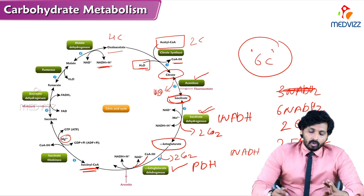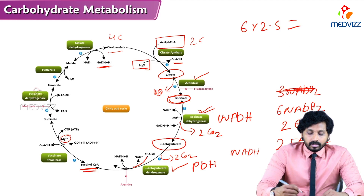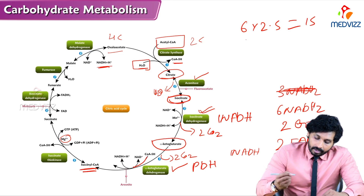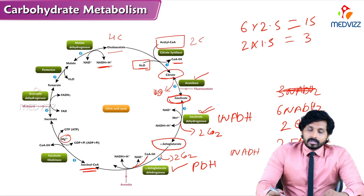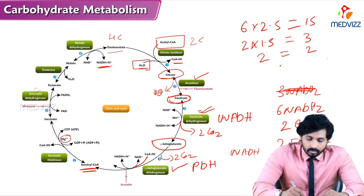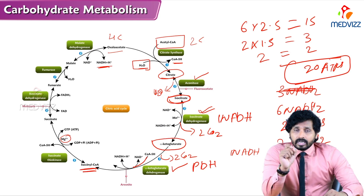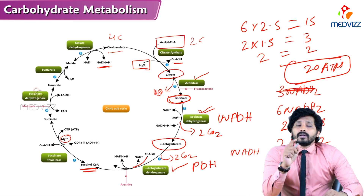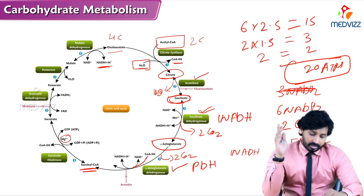Overall per glucose: 2 GTPs and 2 FADH2 are also produced. Using the new calculation: 6 NADH × 2.5 = 15 ATPs, 2 FADH2 × 1.5 = 3 ATPs, and 2 GTPs = 2 ATPs, giving a total of 20 ATPs from one molecule of glucose through TCA cycle. Therefore, 1 acetyl-CoA produces 10 ATPs.